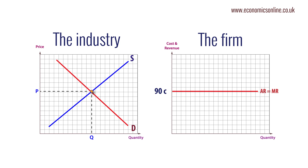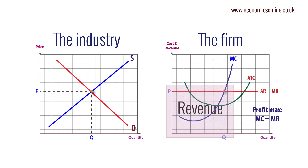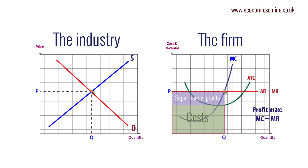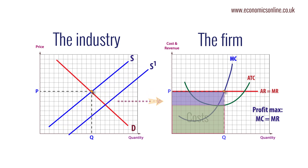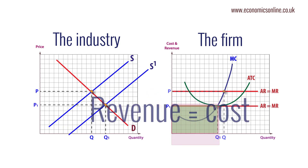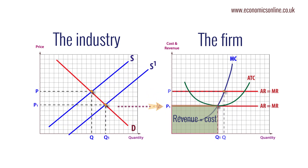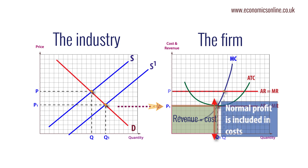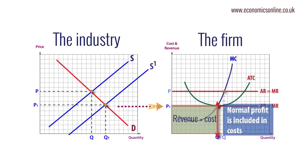Profits are maximized when marginal cost of production equals marginal revenue. As new firms are attracted into the market, market price falls and each firm faces a lower price. New firms stop entering when only normal profits are available — when total revenue equals total costs.